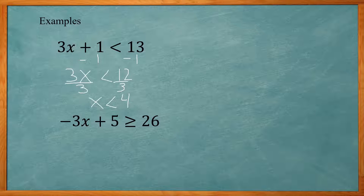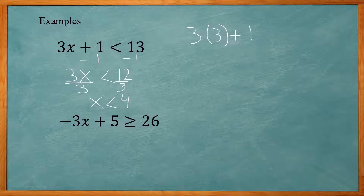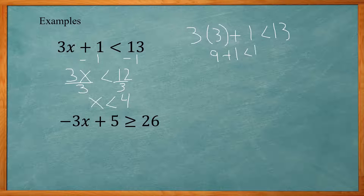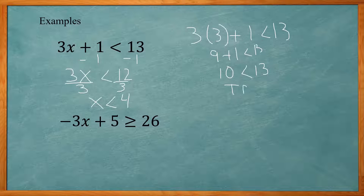For example, if I use 3: 3 times 3 plus 1 is less than 13. 3 times 3 is 9, so 9 plus 1 is less than 13, which is 10 less than 13. That is true.